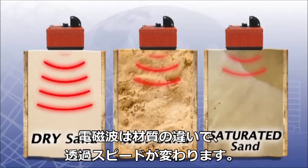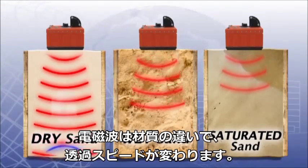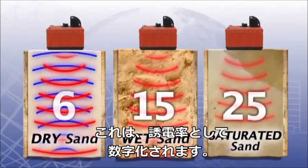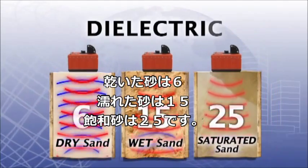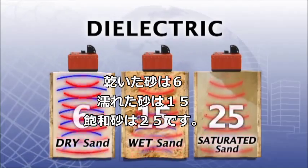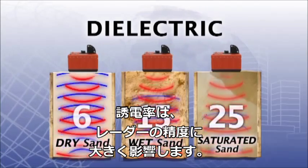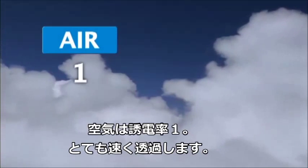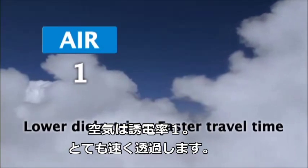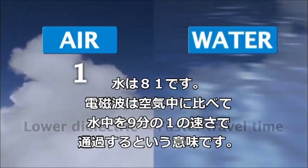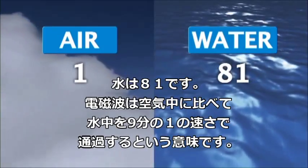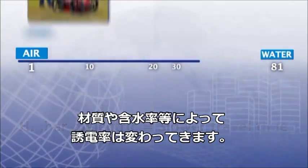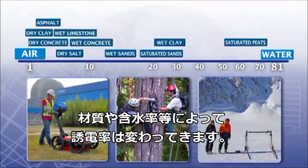Radar travels at different speeds through different mediums. A value is assigned to these mediums to represent different velocities of radar. This value is called dielectric. Dielectric is important so the depth of targets or layers can be accurately estimated. Air has a dielectric of 1, which means radar travels fastest through air. Water has a dielectric of 81, which means radar travels slowest in water. Every medium in the world falls somewhere in between.